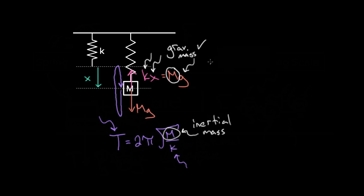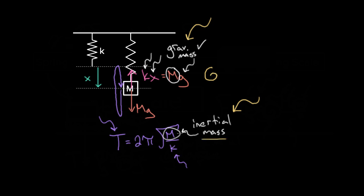To recap: inertial mass and gravitational mass are identical numbers but conceptually different. One tells you how reluctant an object is to being accelerated, and the other tells you how much the object will interact via gravity. If the mass shows up in a basic formula that involves little g or big G, that's the gravitational mass. Otherwise, it's the inertial mass.